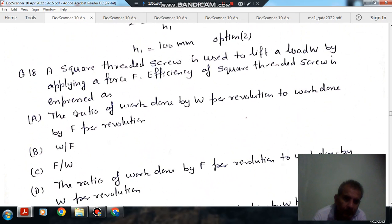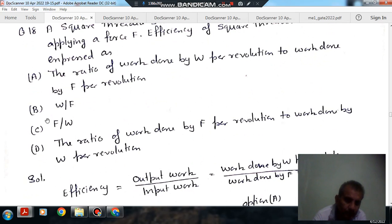Next, a square threaded screw is used to lift a load W by applying a force F. Efficiency is: Option A, the ratio of work done by W per revolution to work done by F per revolution. Option B, W by F. Option C, F by W.